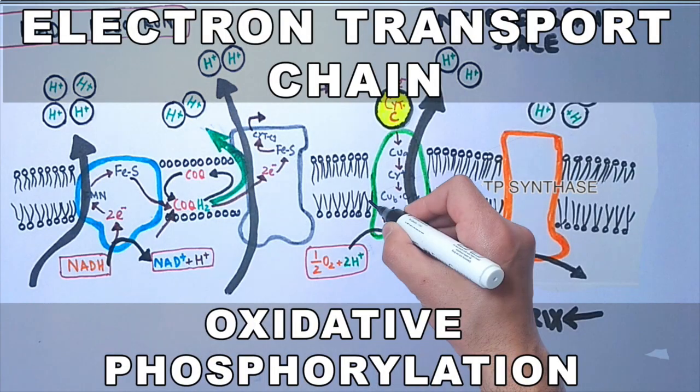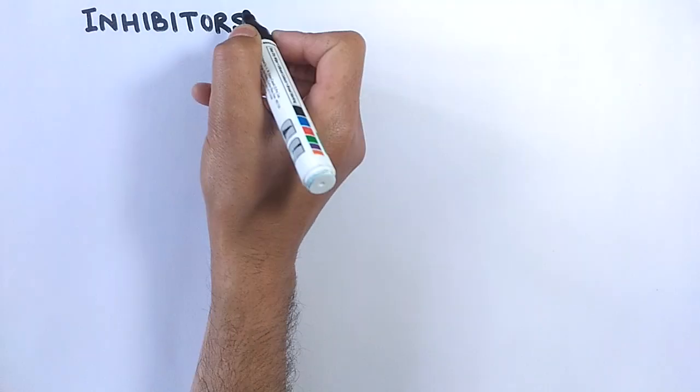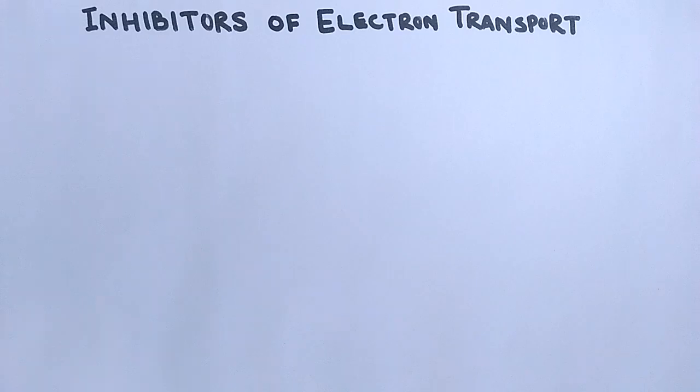In the previous video we discussed about the electron transport chain. If you want to watch that video first, the link slides in here or you can find it in the description. Now in this video we'll be discussing about the inhibitors of electron transport chain.